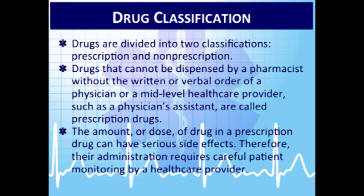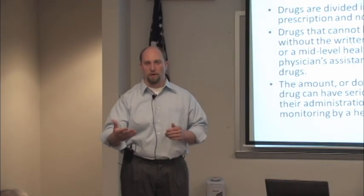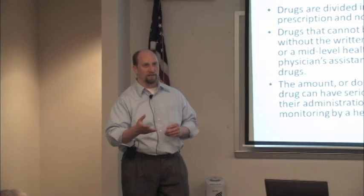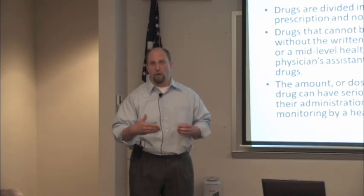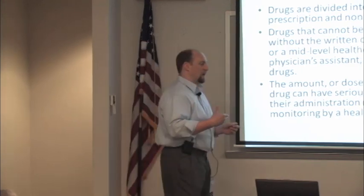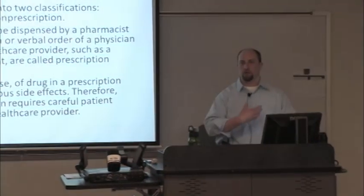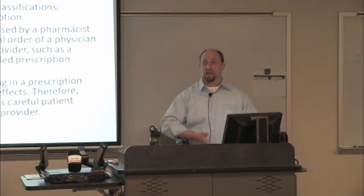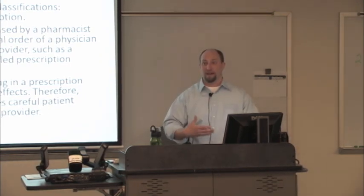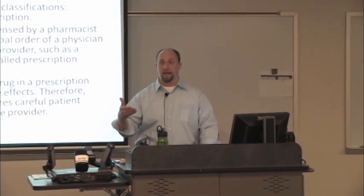There are two classifications of medications: prescription and non-prescription. Non-prescription medications usually get released after a prescription version has been around for a while. Specifically, Prilosec was probably available for 10 to 13 years before the over-the-counter version was available. Efficacy — meaning how well the drug actually works to control acid reflux and gastric pH — was established before the medication went generic.